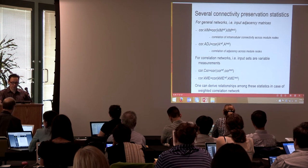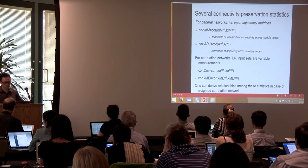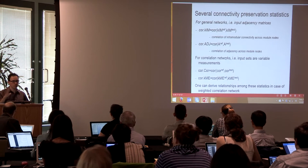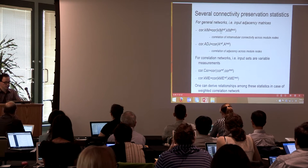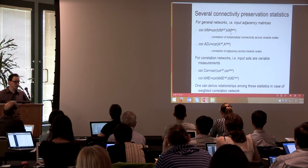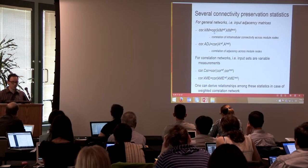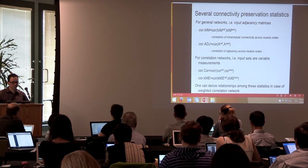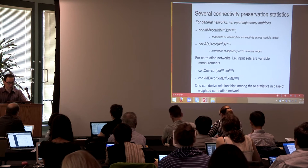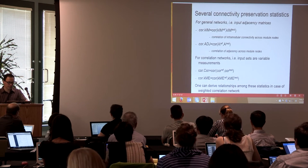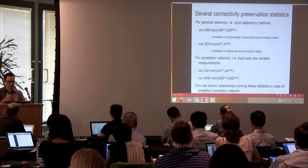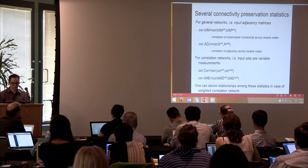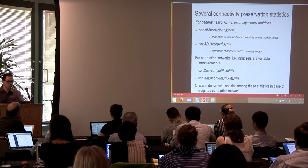Here are some intuitive connectivity preservation statistics. Given a human brain module, measure the intramodular connectivity of all genes in the reference set, and also measure intramodular connectivity in the chimpanzee test data. The correlation across these connectivities measures similarity or preservation of connectivity. Another statistic: take the adjacency matrix among those genes, vectorize it for both datasets, and correlate the two vectors — this is called 'cor.adjacency'.